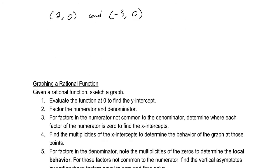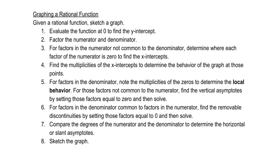To graph a rational function, go in this order: first find the y-intercept, then factor and find x-intercepts from the non-common factors of the numerator. Look at multiplicities of x-intercepts to determine behavior — crossing or touching, just like with polynomials. Then look at multiplicities of denominator zeros to determine local behavior near vertical asymptotes — whether it acts like the reciprocal or reciprocal squared. Find removable discontinuities by seeing what cancels, then find horizontal or slant asymptotes, and sketch.